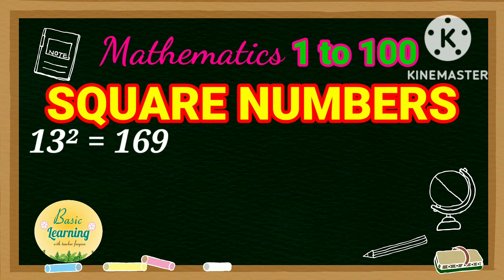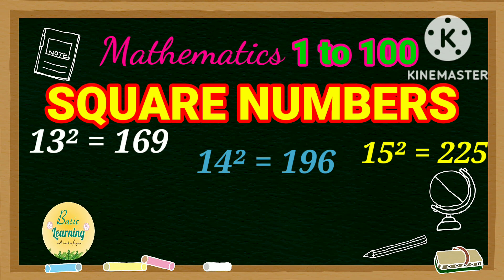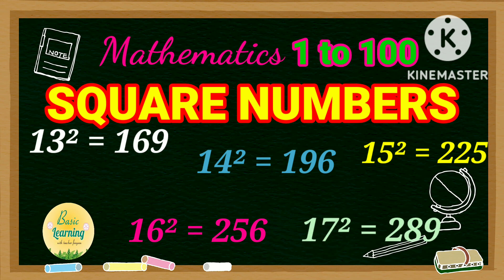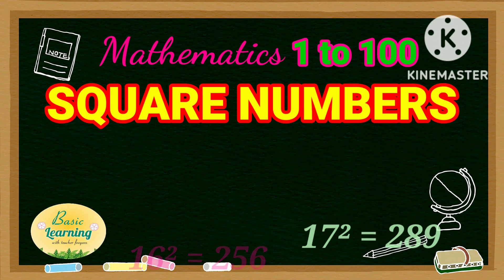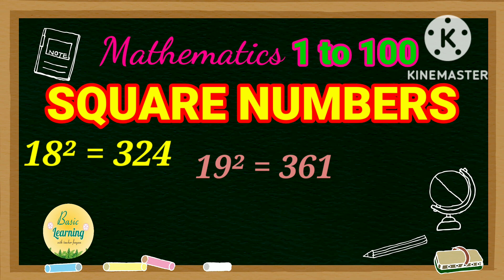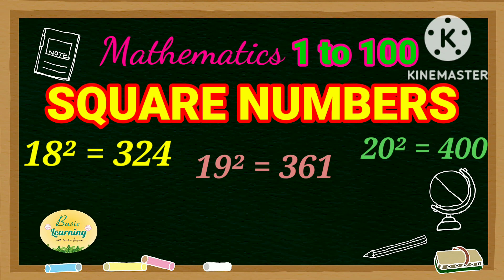Square of 13 is 169. Square of 14 is 196. Square of 15 is 225. Square of 16 is 256. Square of 17 is 289. Square of 18 is 324. Square of 19 is 361. Square of 20 is 400.